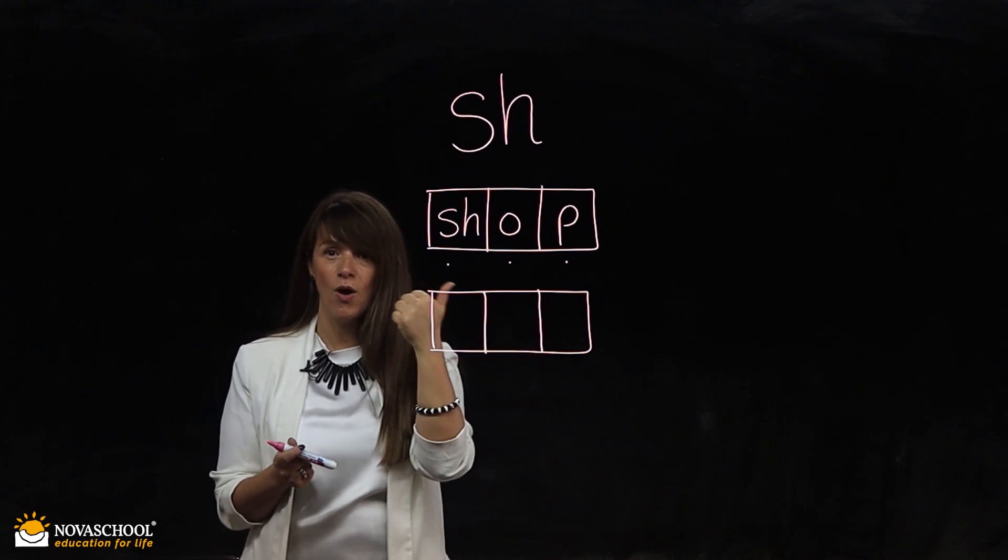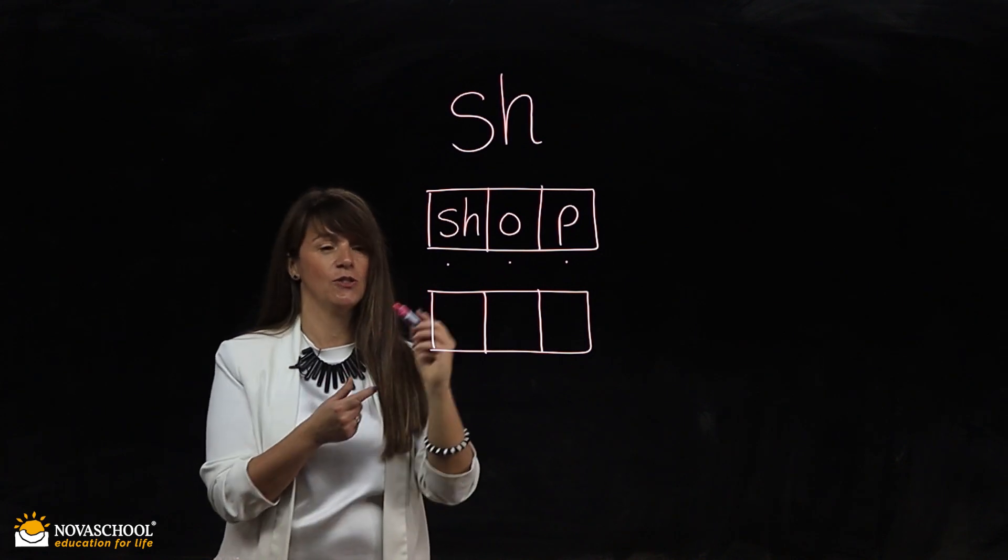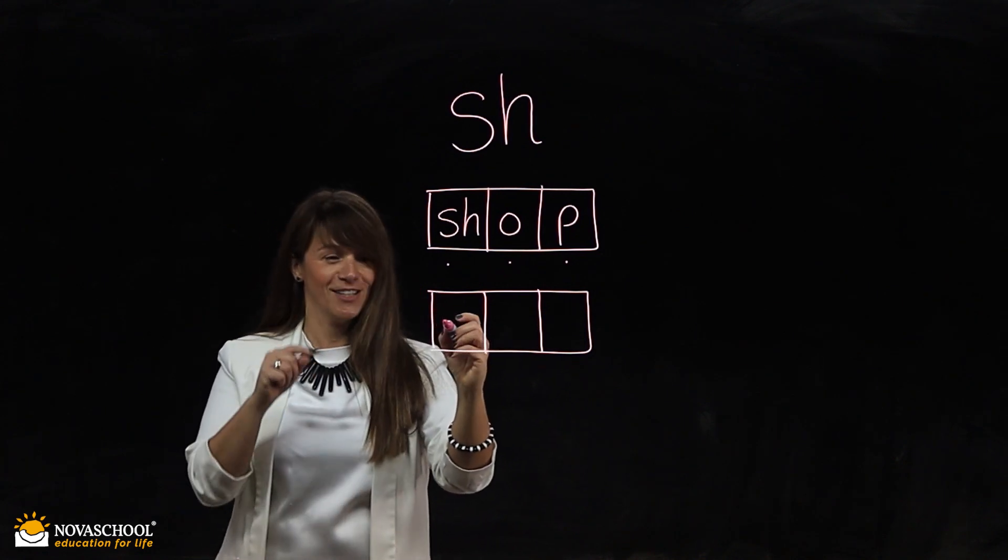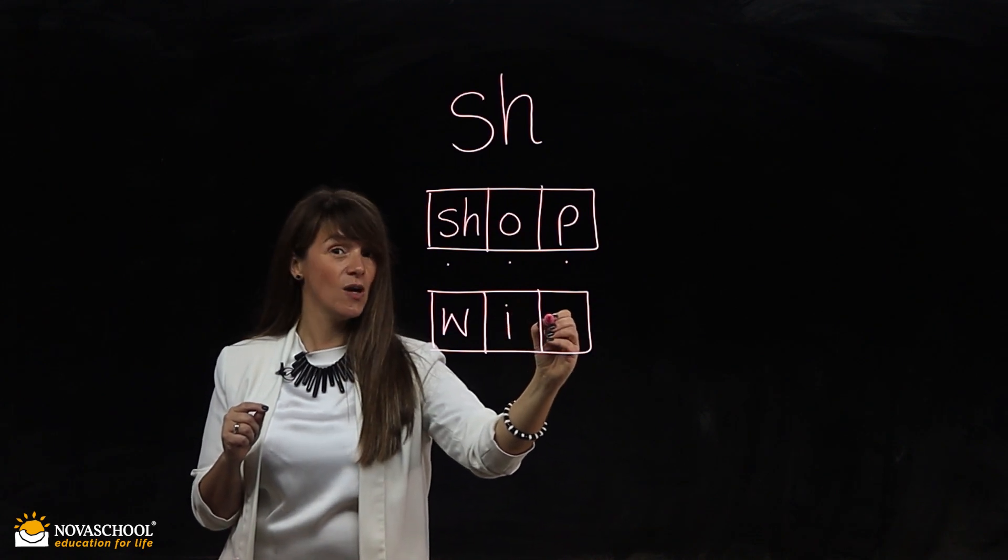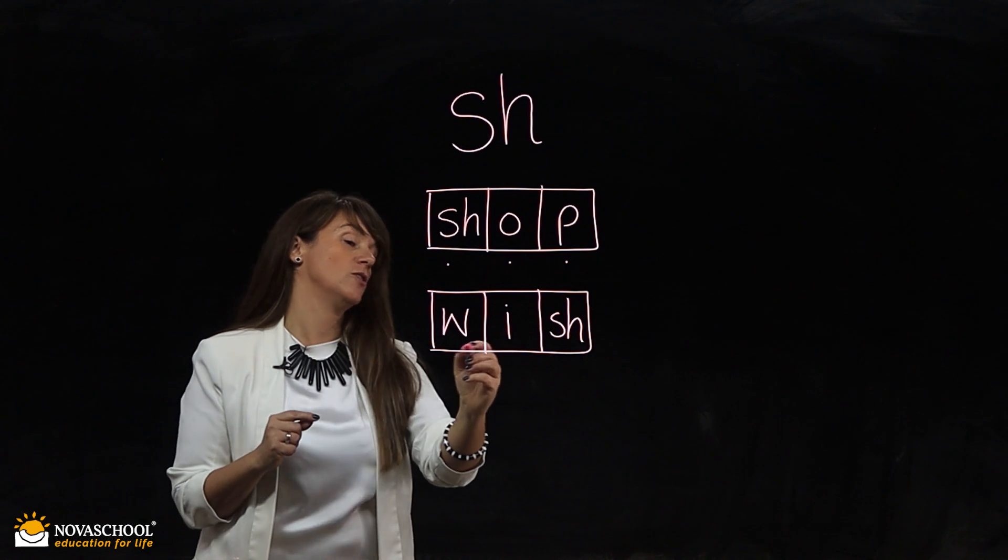Let's say them. W, i, shh. Wish. Good. So the first one, what was it? That's right. W, i, good. And the last one? Shh. Very good.